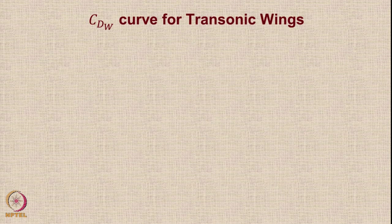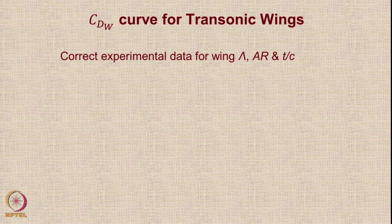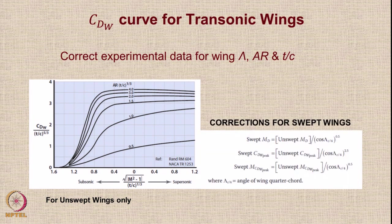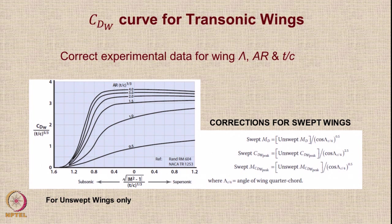This is how you calculate CDW for transonic wings — it depends on the use of experimental data. The experimental data must be corrected for three important parameters: the sweep, the aspect ratio, and T/C. This particular graph is applicable only for unswept wings. You apply corrections for these three parameters, so the values of M_D, CDW peak, and M_CDW peak are corrected using the cosine of the quarter-chord sweep. This correction helps you obtain the values.